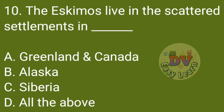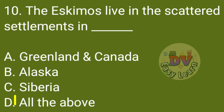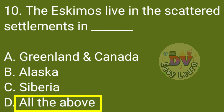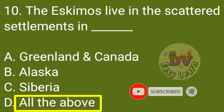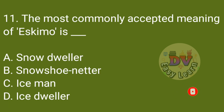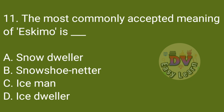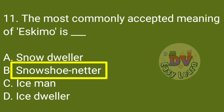Q10: The Eskimos live in scattered settlements in? Correct answer: All of the above — Greenland, Canada, Alaska, and Siberia. Q11: The most commonly accepted meaning of Eskimo is? Correct answer: Snowshoe netter.